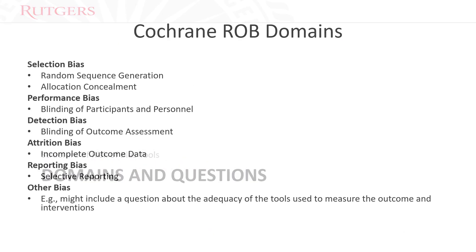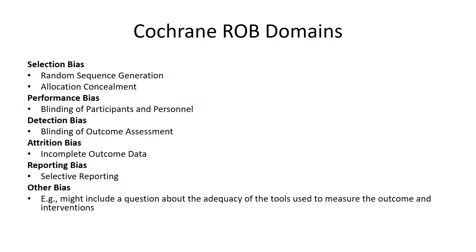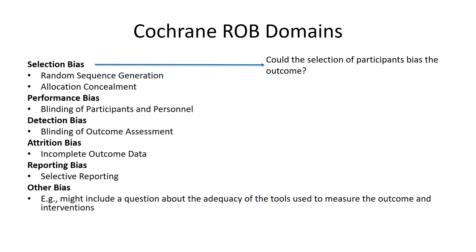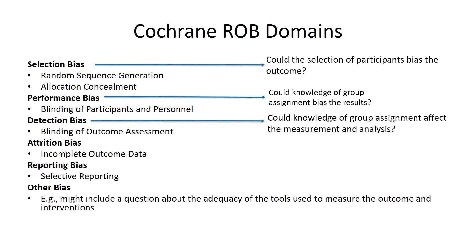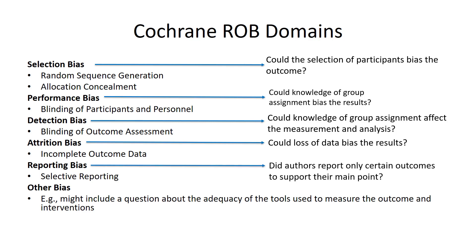Now, domains and questions. In the Cochrane Risk of Bias, there are six domains. For selection bias, it really gets at could the selection of participants bias the outcome? For performance bias, could the knowledge of group assignment bias the results? For detection bias, could the knowledge of group assignments affect the measurement and analysis? For attrition, could loss of data bias the results? For reporting, did authors report only certain outcomes to support their main point? And then there's other bias, which might include questions about the adequacy of the tools used to measure the outcome or the interventions.